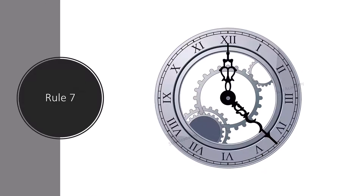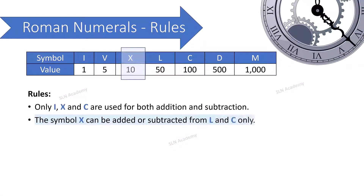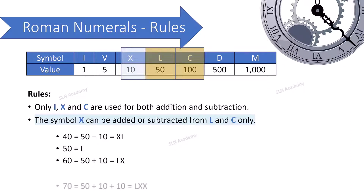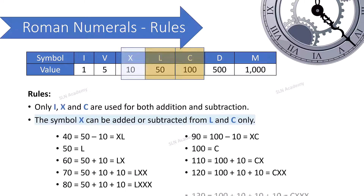Rule number seven: The symbol X can be added to or subtracted from L and C only. X is added to or subtracted from L (XL = 40, LX = 60) and added to or subtracted from C (XC = 90, CX = 110).